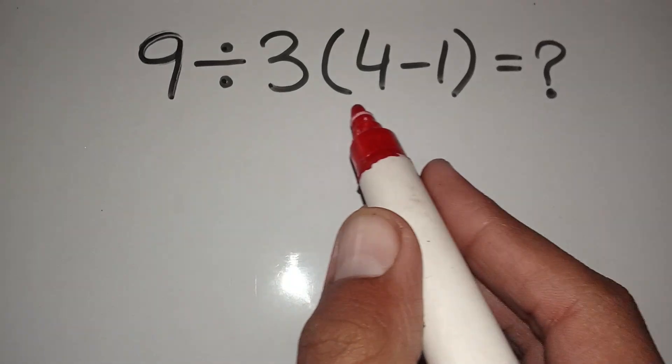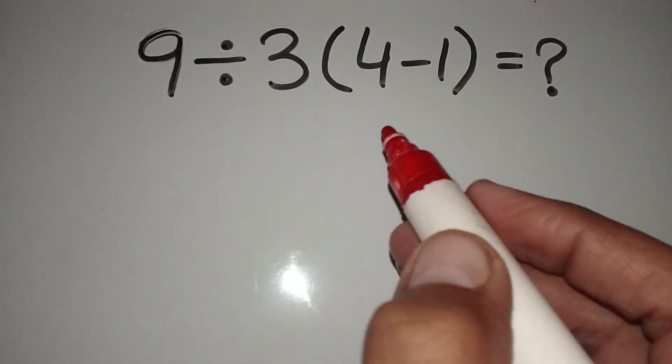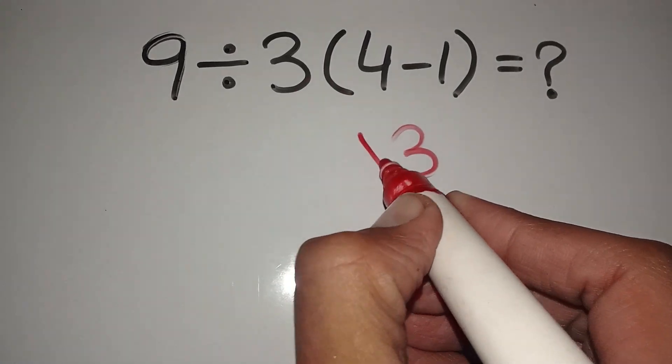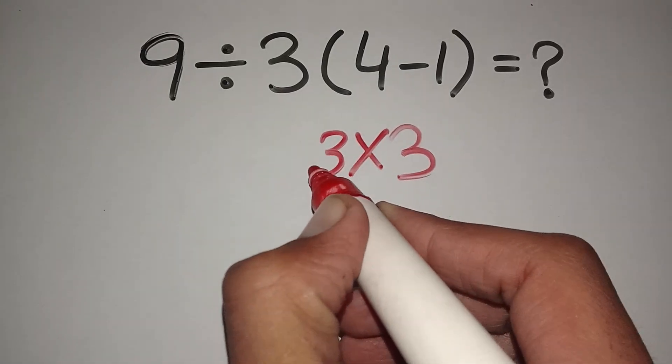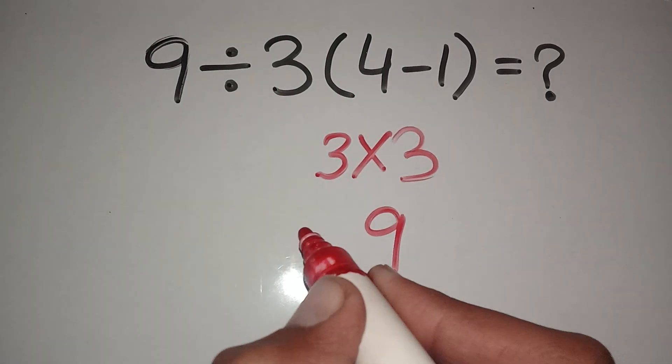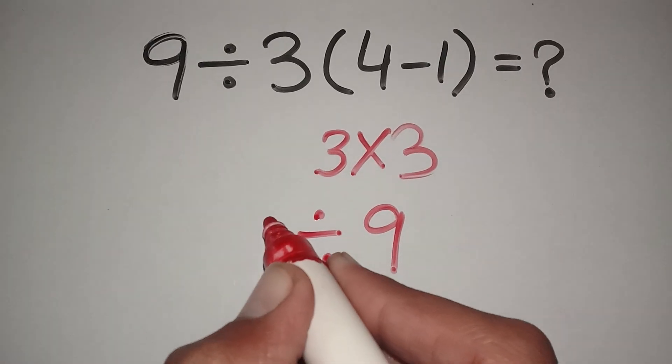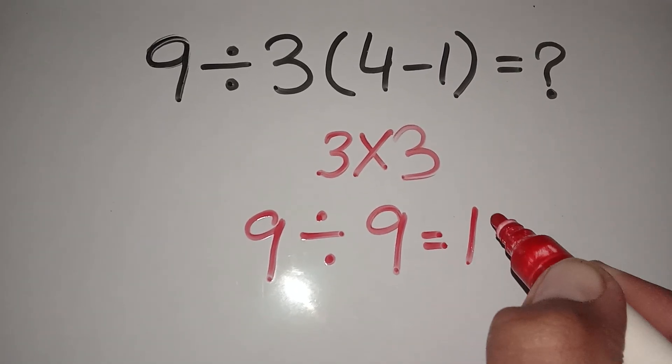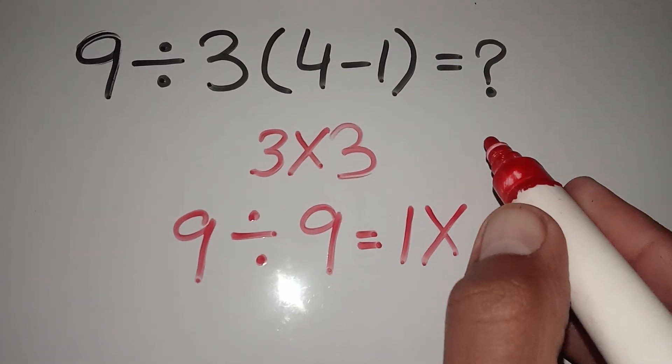They can solve this question as 4 minus 1 equals 3. Multiply by this 3, so 3 times 3 equals 9. And divide it by this 9, so 9 divided by 9 equals 1. But trust me, this answer is absolutely wrong.